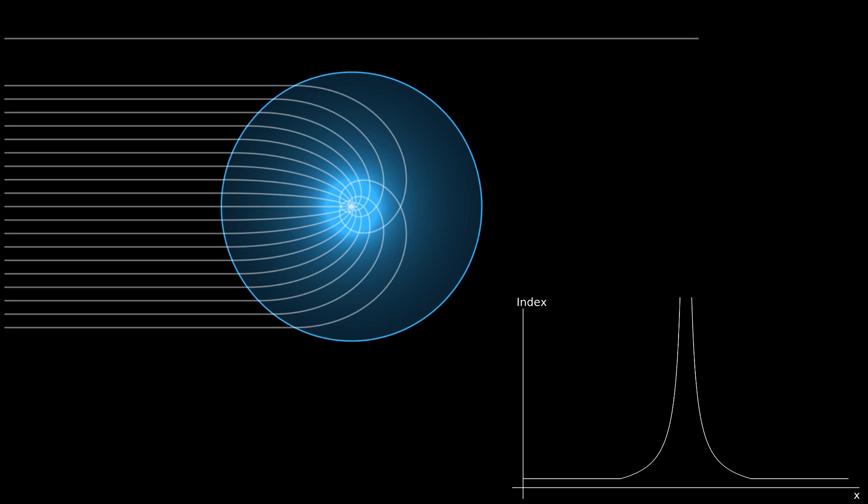Now, of course this lens is impossible to create. The closer we get to the center of the lens, the higher the refractive index is, and at precisely the origin, the refractive index is, well, infinite.